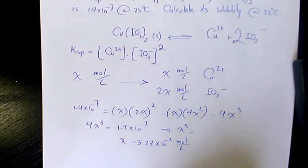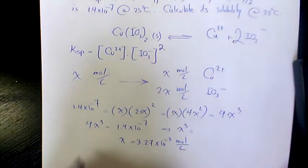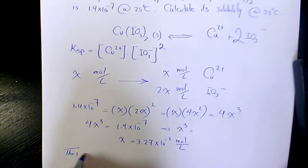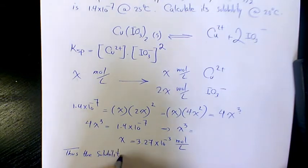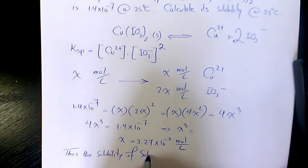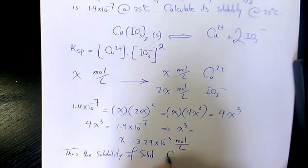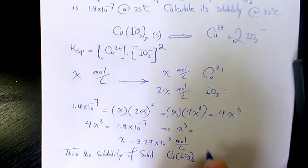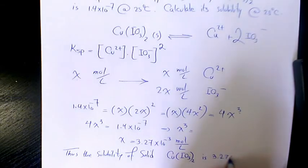That's going to be the solubility of this salt. So I'm going to say the solubility of solid copper iodate is 3.27×10^-3 mol/L.